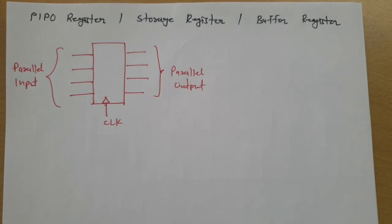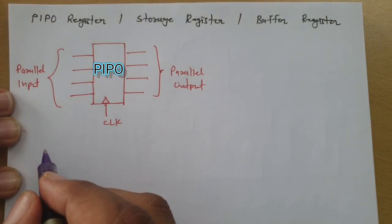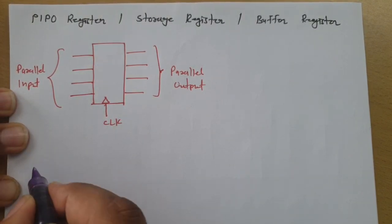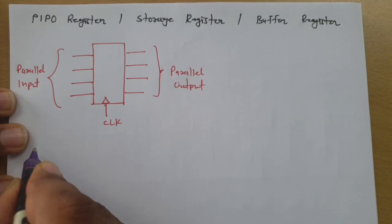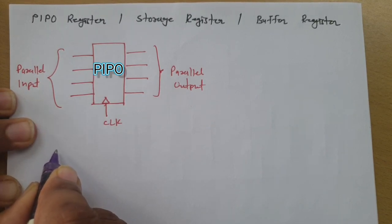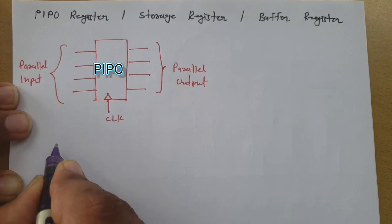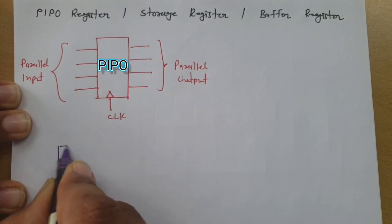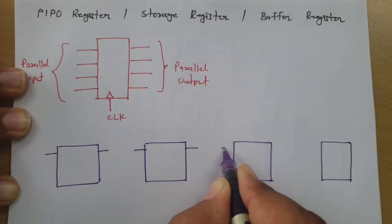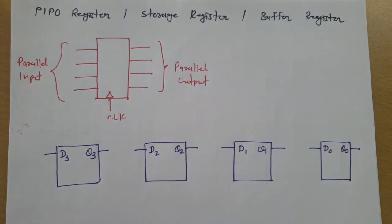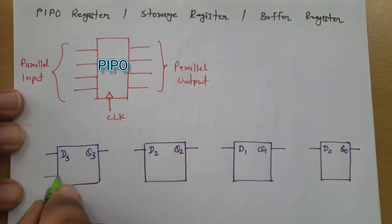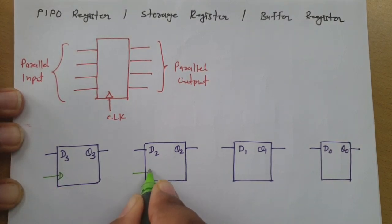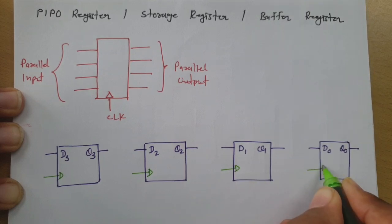Let us understand this by looking at the internal circuit. Here I'll be making a 4-bit parallel input parallel output register. As I mentioned in previous videos, we use D flip-flops. So let me connect 4 D flip-flops and with these I'll be connecting a common clock — a positive edge triggered common clock.